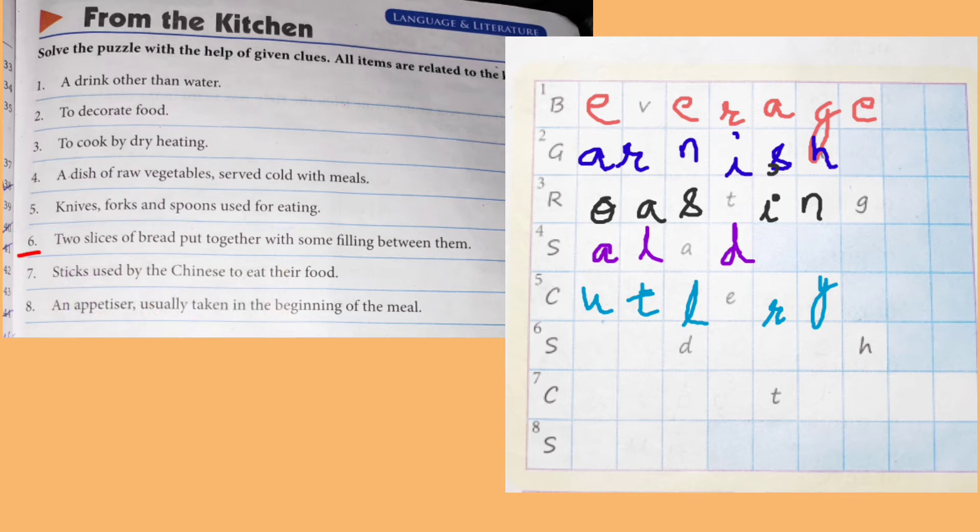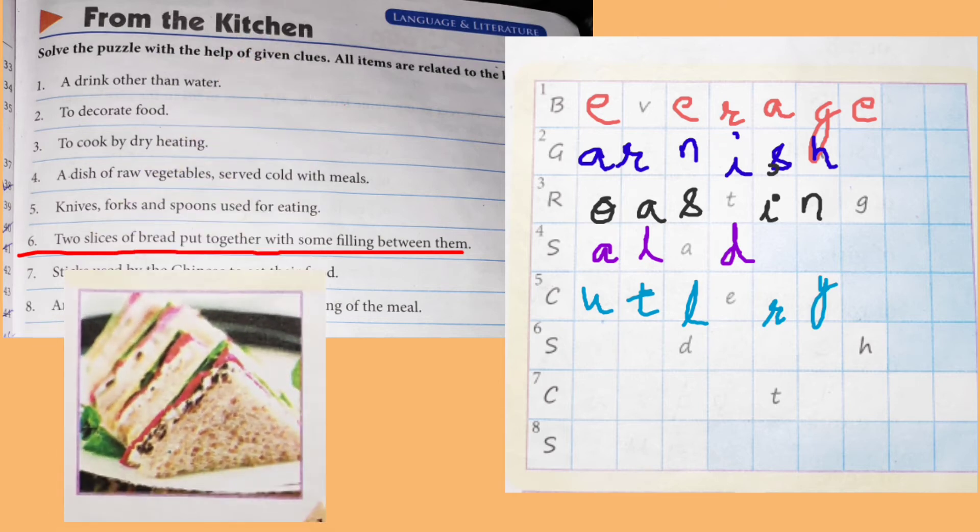Next. Two slices of bread put together with some filling between them. Bread slices of bread put together with some filling between them. Whether it is potato filling or cucumber, tomato filling, onion. So what do we call sandwich? Sandwich. Bread slices of bread. We call sandwich filling.